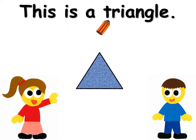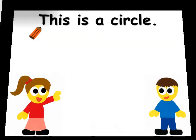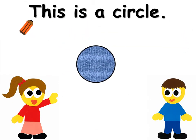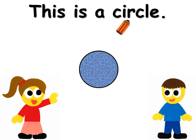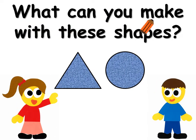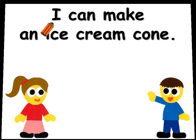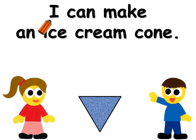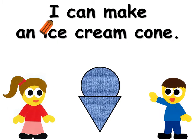This is a triangle. This is a circle. What can you make with these shapes? I can make an ice cream cone.